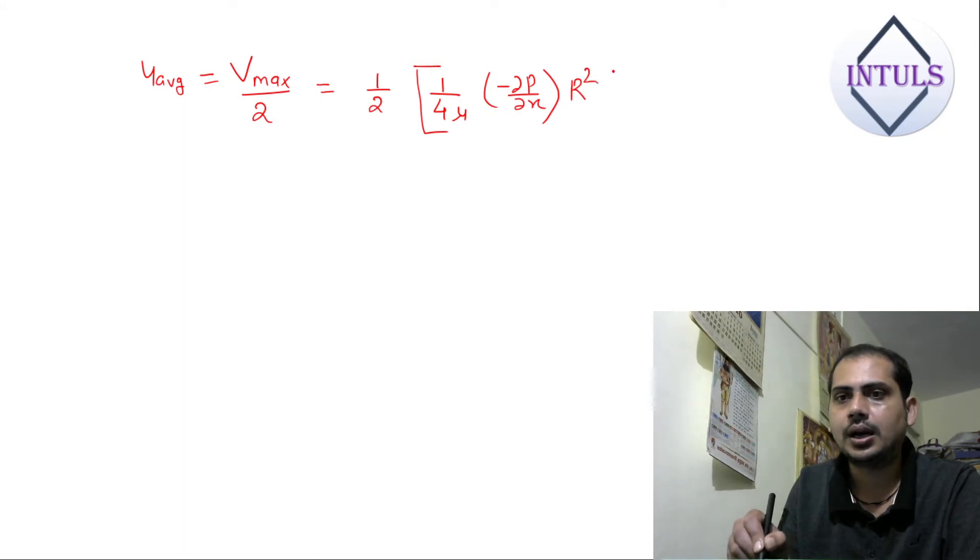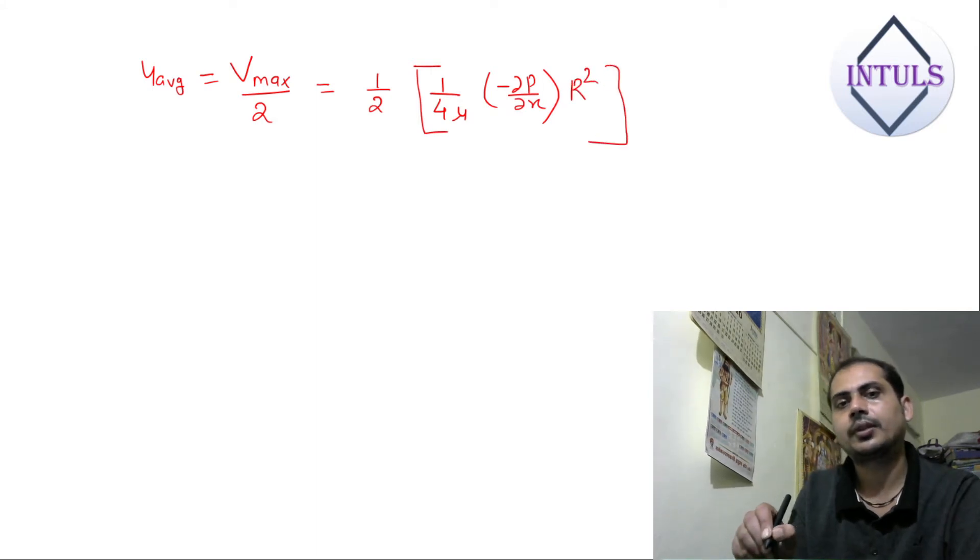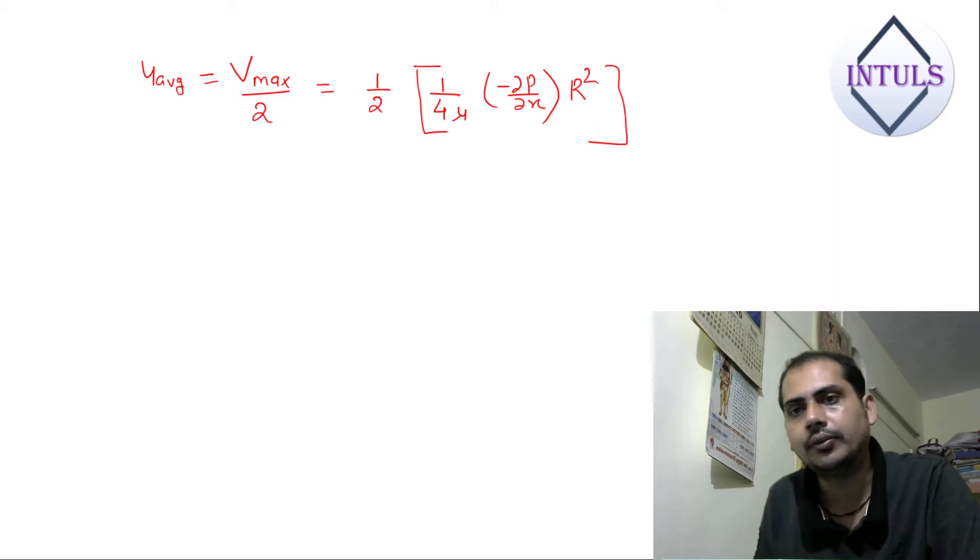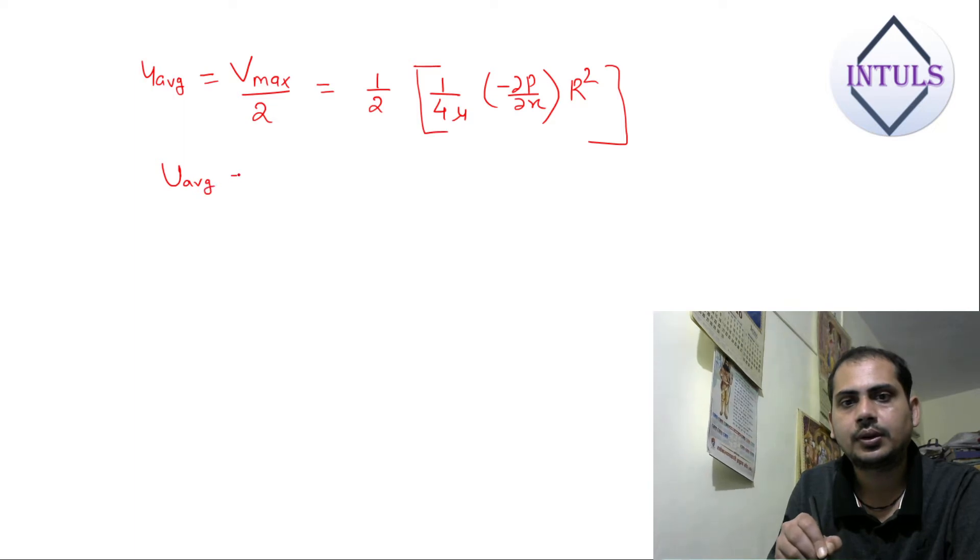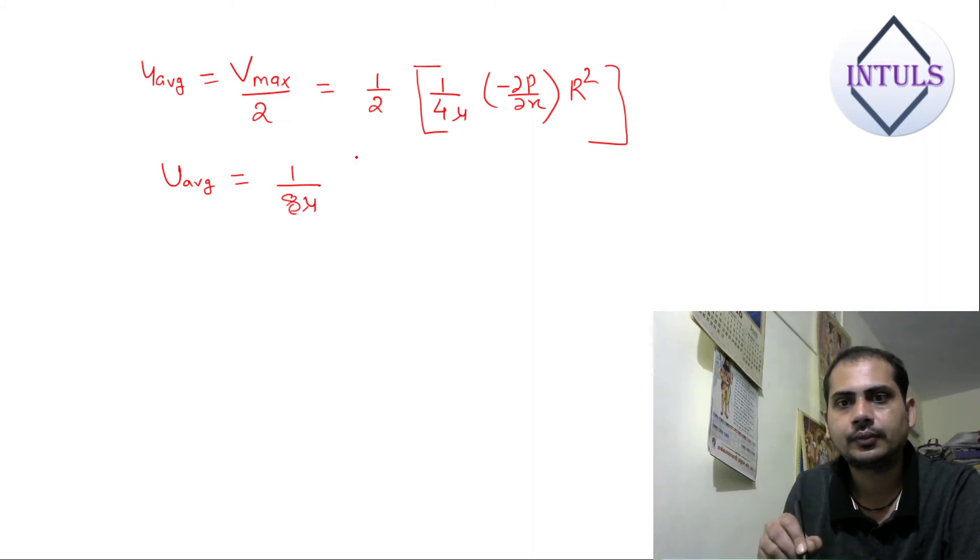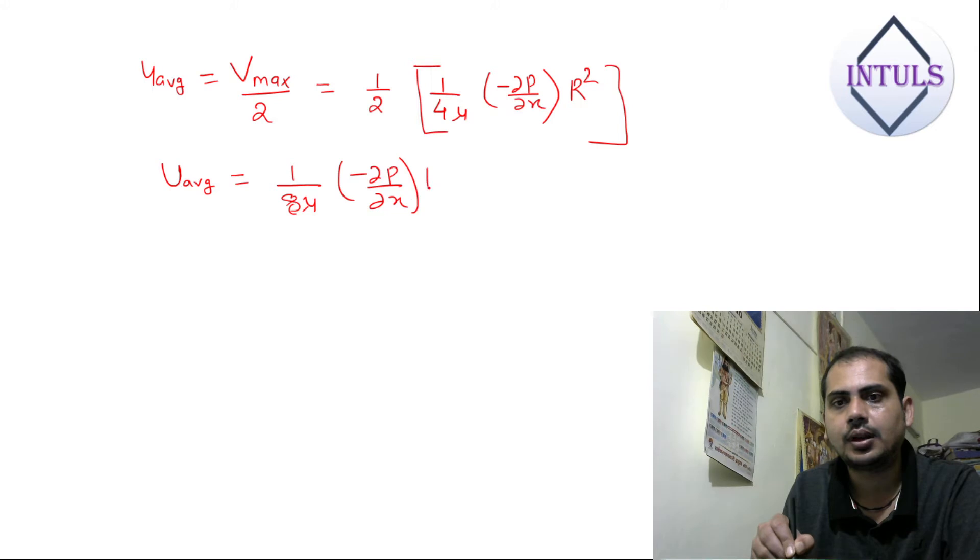What is R? R is the radius of the pipe. So this is the relation. u_average is equal to 1 upon 8 mu minus del P by del X, R square.